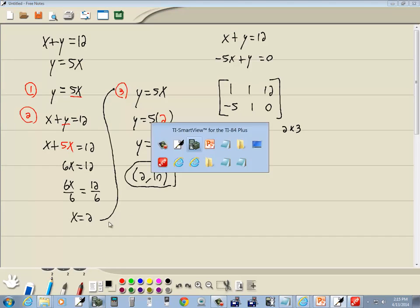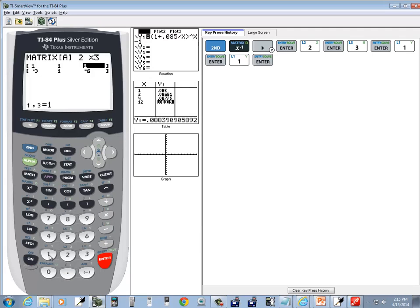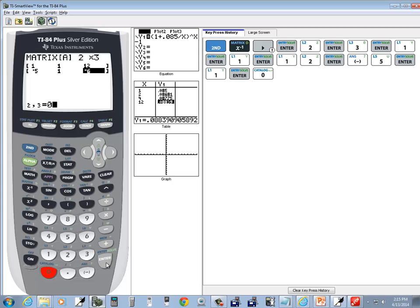Now type in the numbers: 1 enter, 1 enter, 12 enter, negative 5 enter, 1 enter, 0 enter.